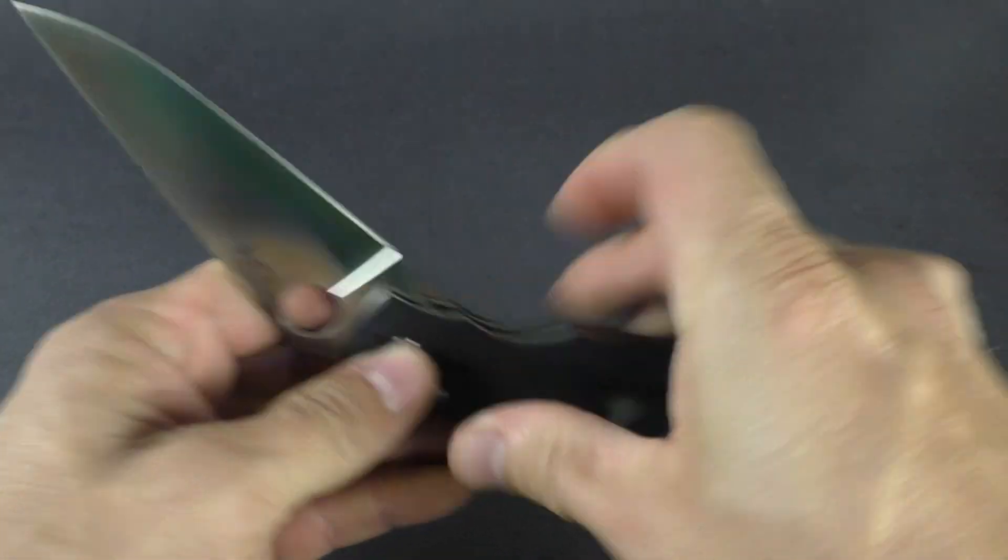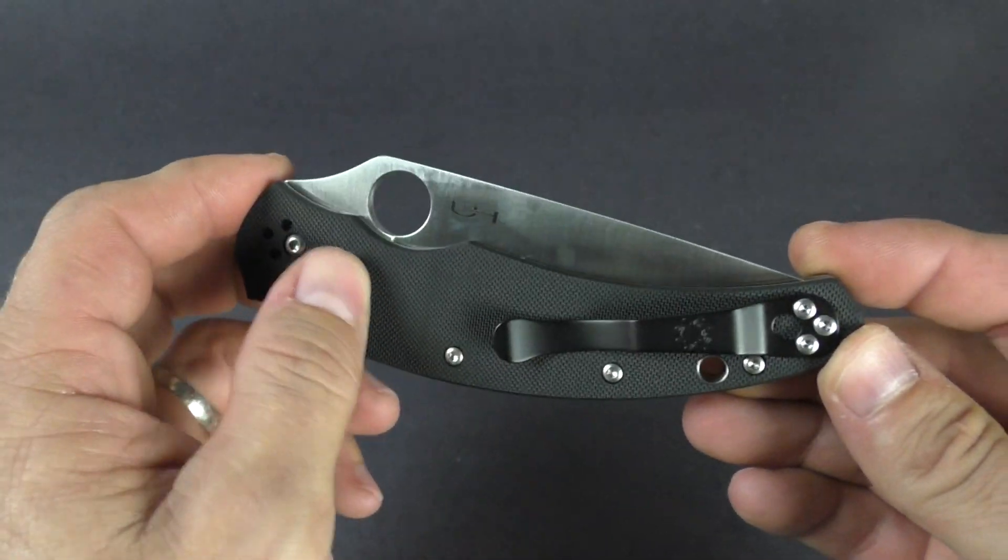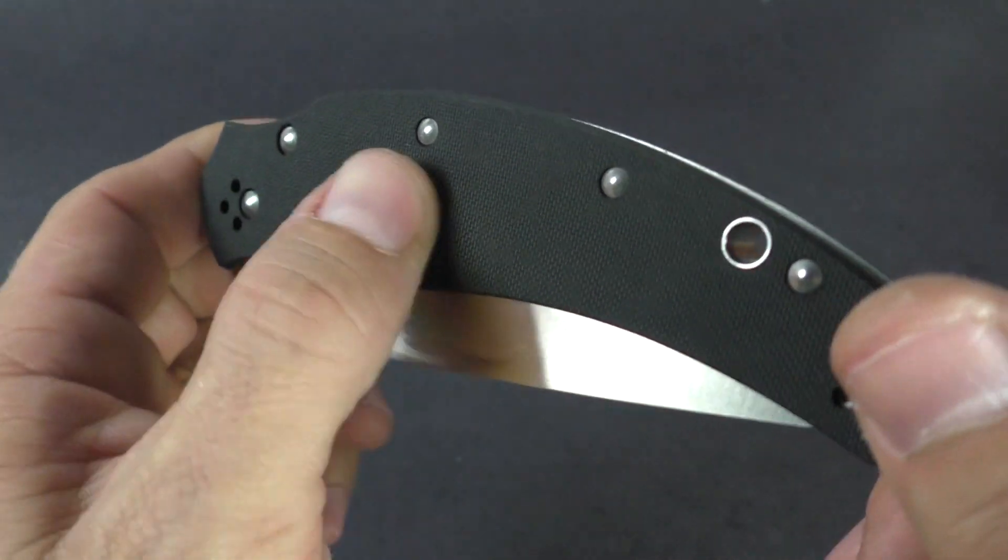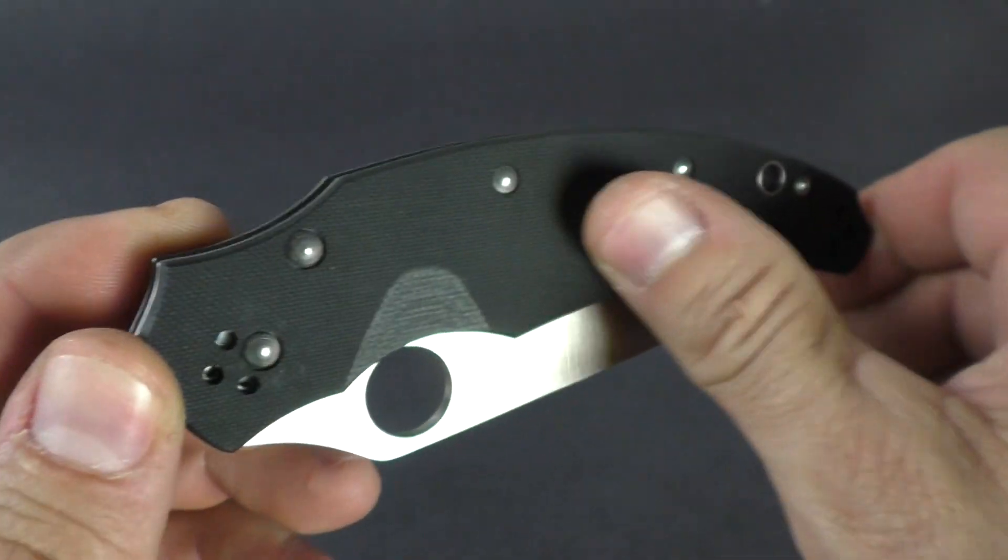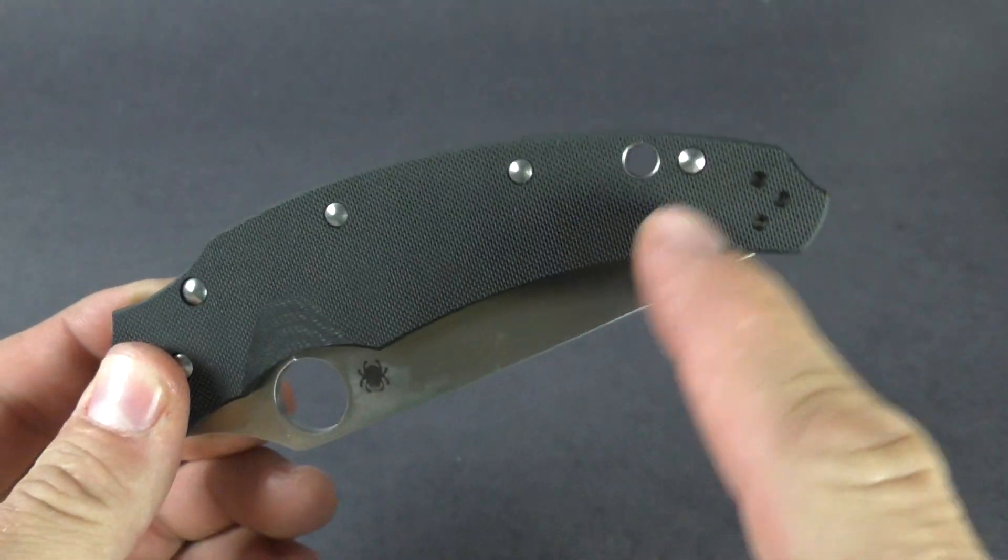Only weighs a little over four ounces. Does have a black G10 handle and it is textured here, so if your hands are wet or anything like that, you'll probably still get a great grip on there. Lanyard hole is up a little bit further from the bottom here.